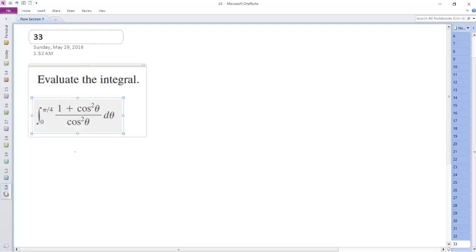All right, let's find the integral. This can be broken down to 1 over cosine squared theta plus 1, or secant squared theta plus 1.